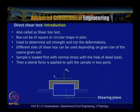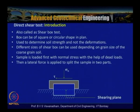The direct shear test, also called the shear box test, uses a box that can be square or circular in shape. Common sizes are 60×60 mm, 100×100 mm, or 300×300 mm. The size is chosen depending on the particle size of the soil to prevent scale effects.